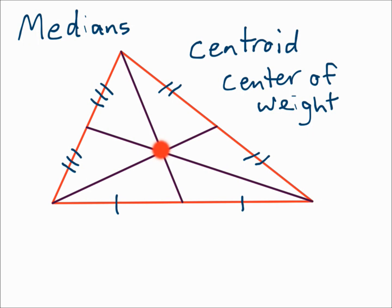Since the centroid is two-thirds of the distance from the vertex to the side, it cuts each median into lengths that are two-thirds of the way and one-third of the way. Since two-thirds is twice as much as one-third, the distance from the centroid to the vertex is twice as much as it is from the centroid to the side. For example, if one part of the median is four, then the other part has to be eight, because it's twice as much.